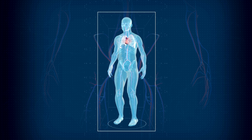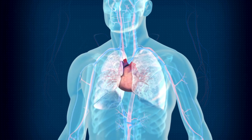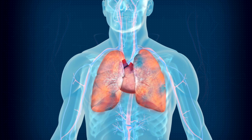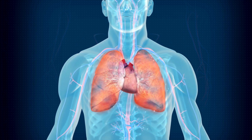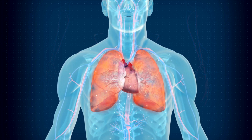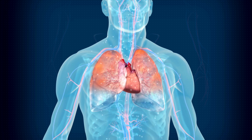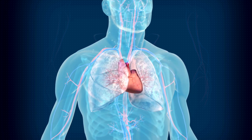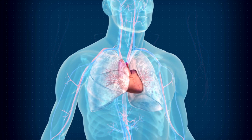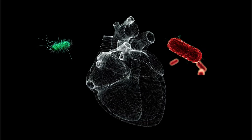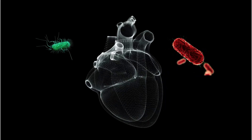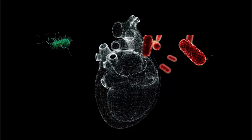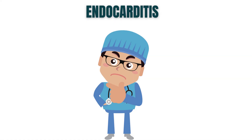The heart is an incredible organ, tirelessly pumping life throughout our bodies. But did you know that the lining of the heart, called the endocardium, can become infected? That's endocarditis. Endocarditis is typically caused by bacteria, such as streptococcus or staphylococcus, that enter our bloodstream and latch onto the heart's lining. But how does this happen?